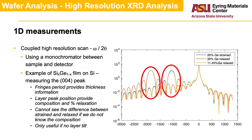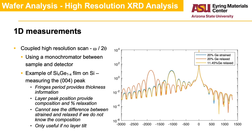The position of the layer peak is defined by the relaxation and the composition of the film. On this example, we can see that we can get a very similar plot for a strained film with 20% germanium and a fully relaxed film with 11.45% germanium. Therefore, a single omega-theta measurement may not be sufficient to provide the composition and relaxation without any other data. One should also point out that if the layer is tilted with respect to the substrate, the measurement becomes challenging and at times impossible using the triple-axis detector, which is the typical detector for such a measurement.